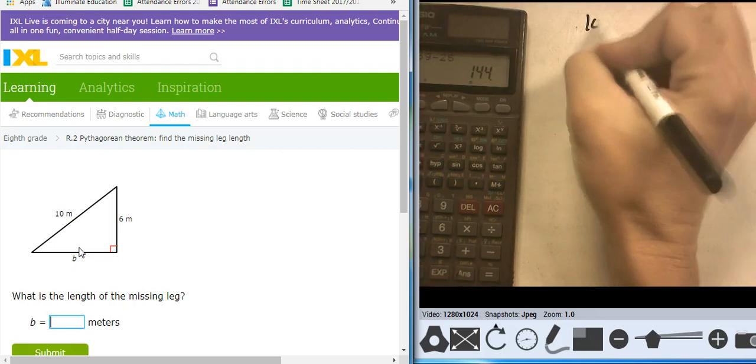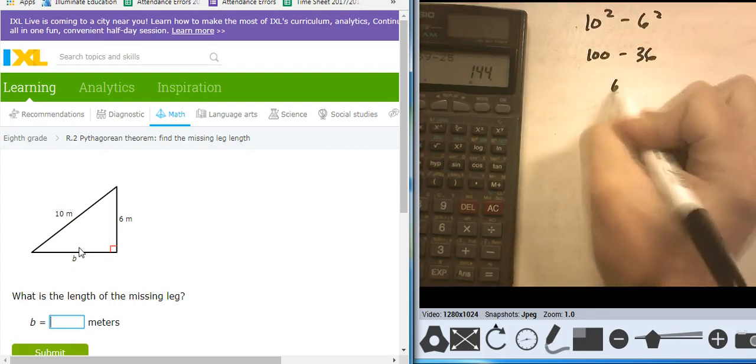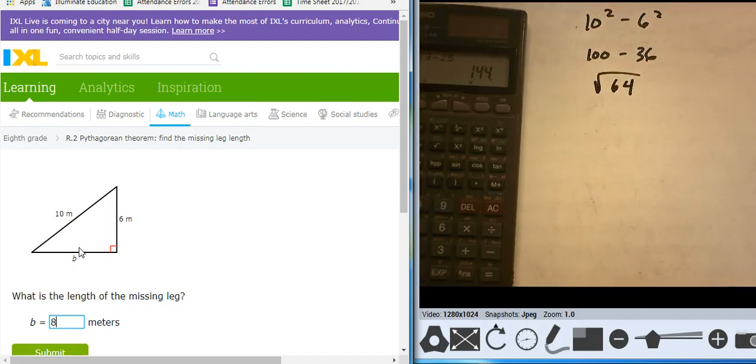It's going to be 10 squared minus 6 squared, that's 100 minus 36, takes me to 64. Take the square root of that, takes me to 8.